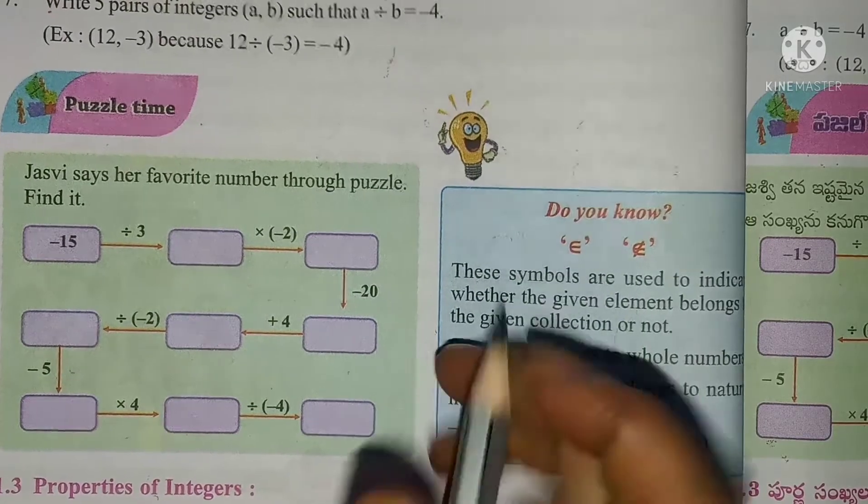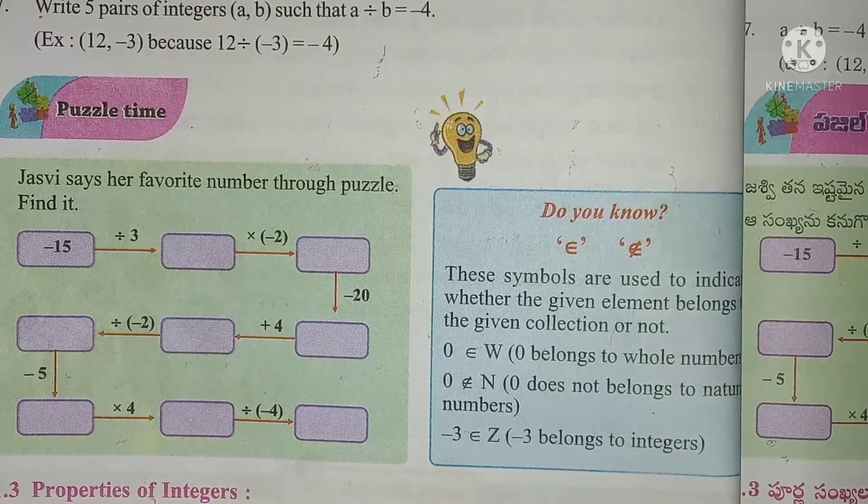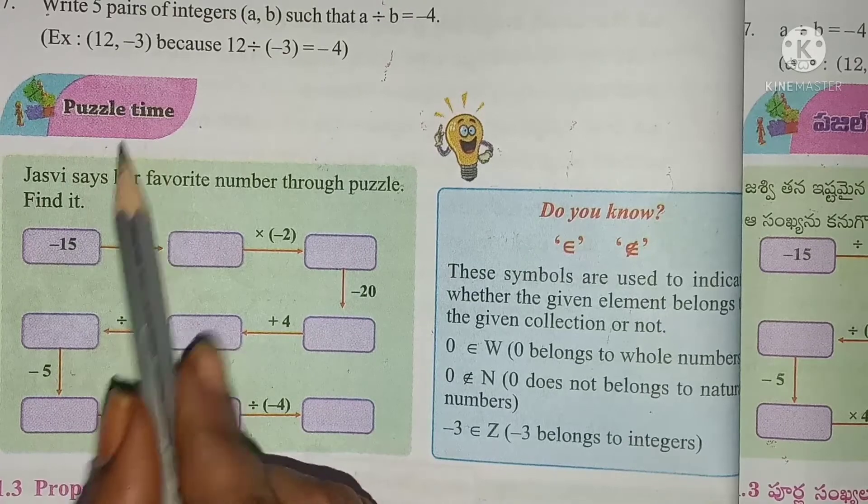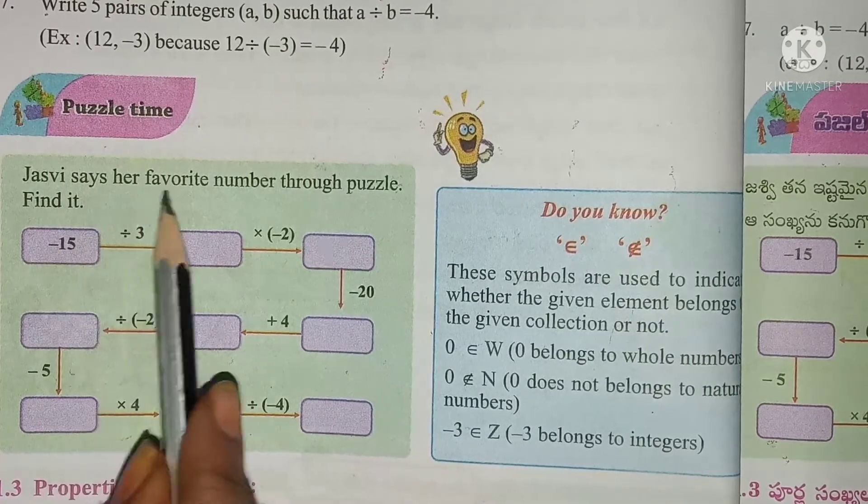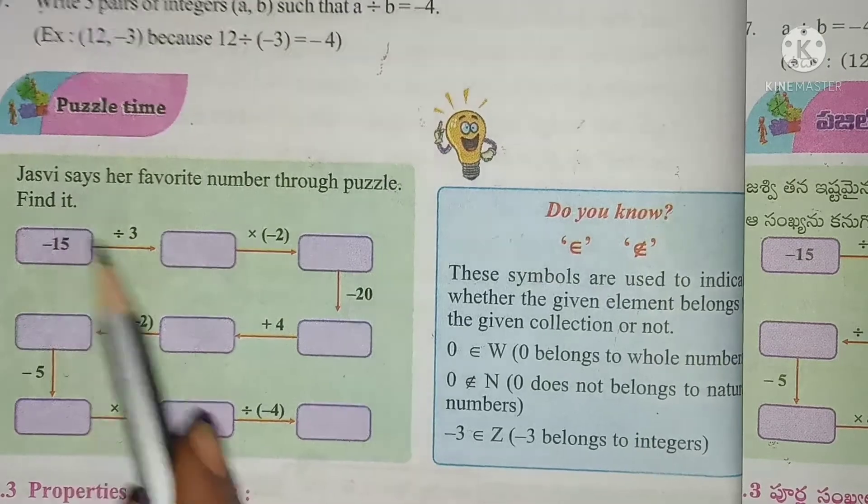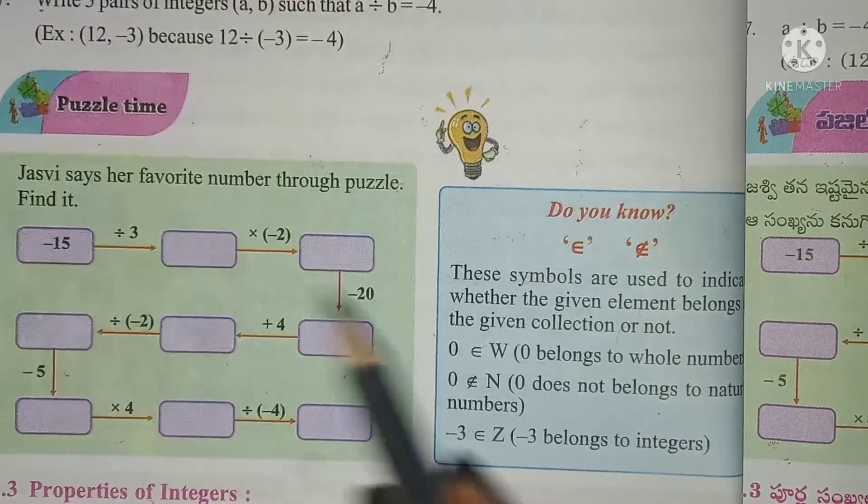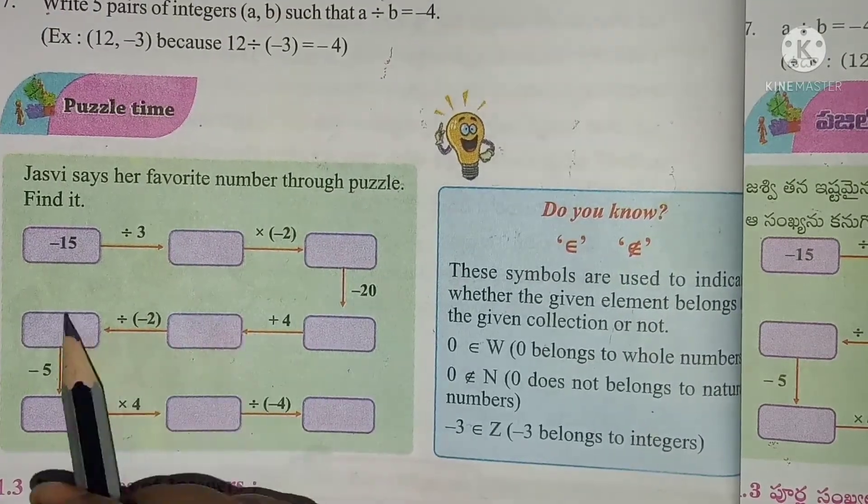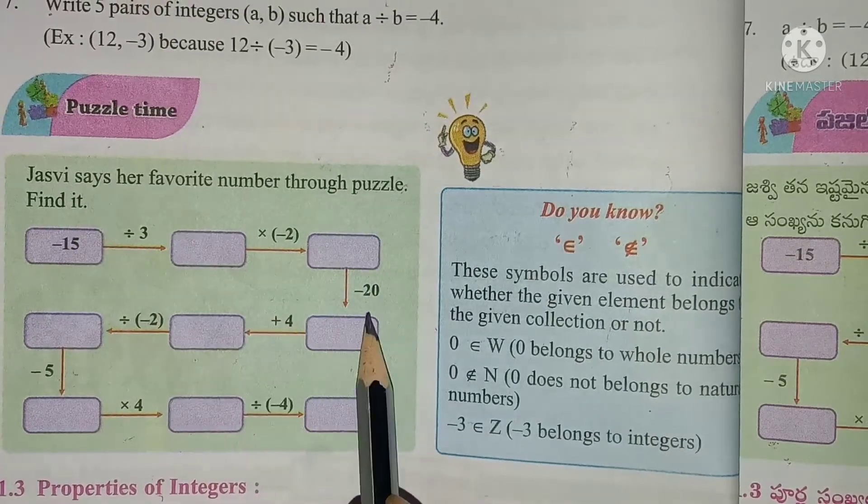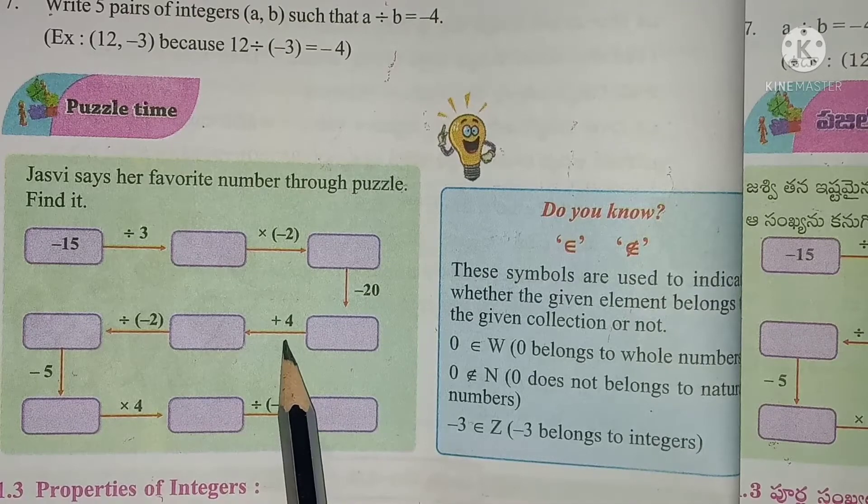Hello children, welcome back to Vidyarthi Tutorials. Here is the puzzle to solve. It is puzzle time. Jasvi says her favorite number through puzzle, find that. In this puzzle there are mathematical operations: division, multiplication, subtraction, and addition.